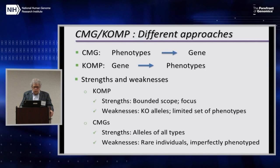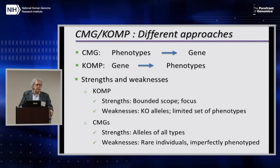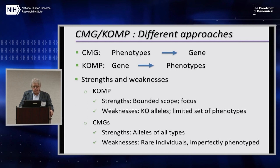The CMGs and the COMP programs have this common goal, but they have different approaches, and I think those approaches are complementary. In the CMGs, we start with the phenotypes. We collect individuals from anywhere around the world, and use modern genomic and genetic techniques to figure out the variants and genes responsible for these phenotypes. In COMP, of course, you're starting from the gene and determining the phenotype as a consequence of a perturbation of the gene.